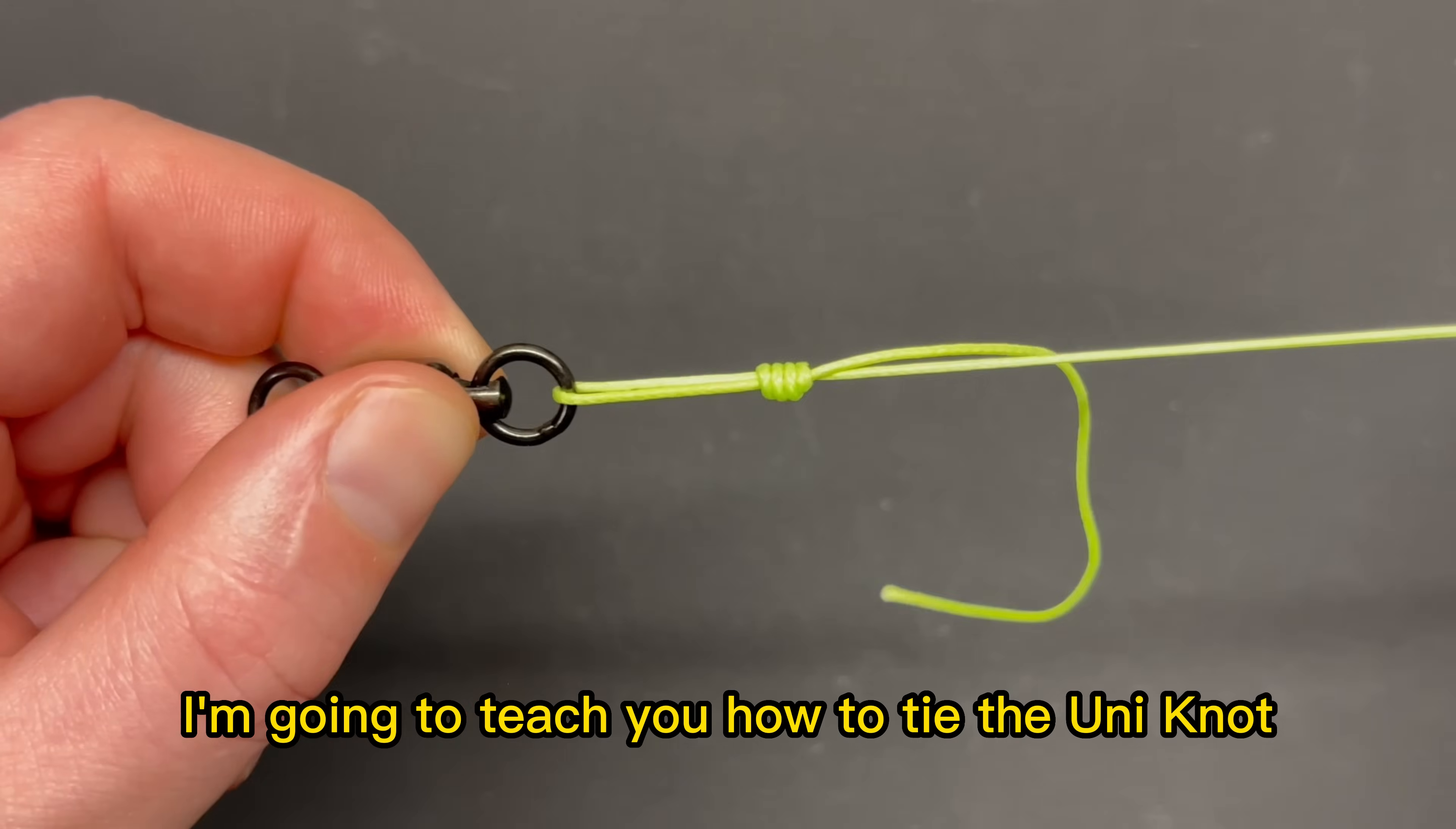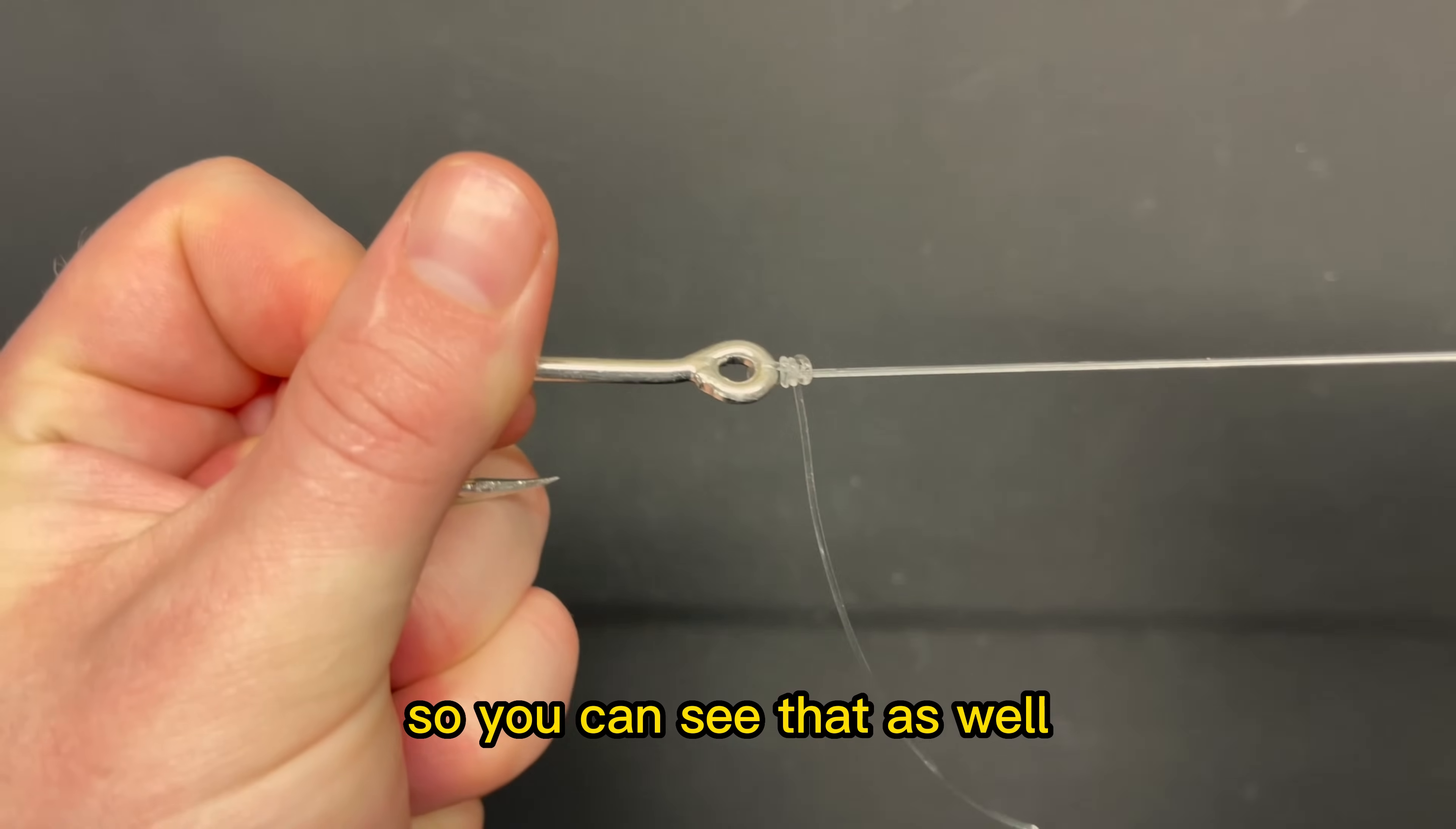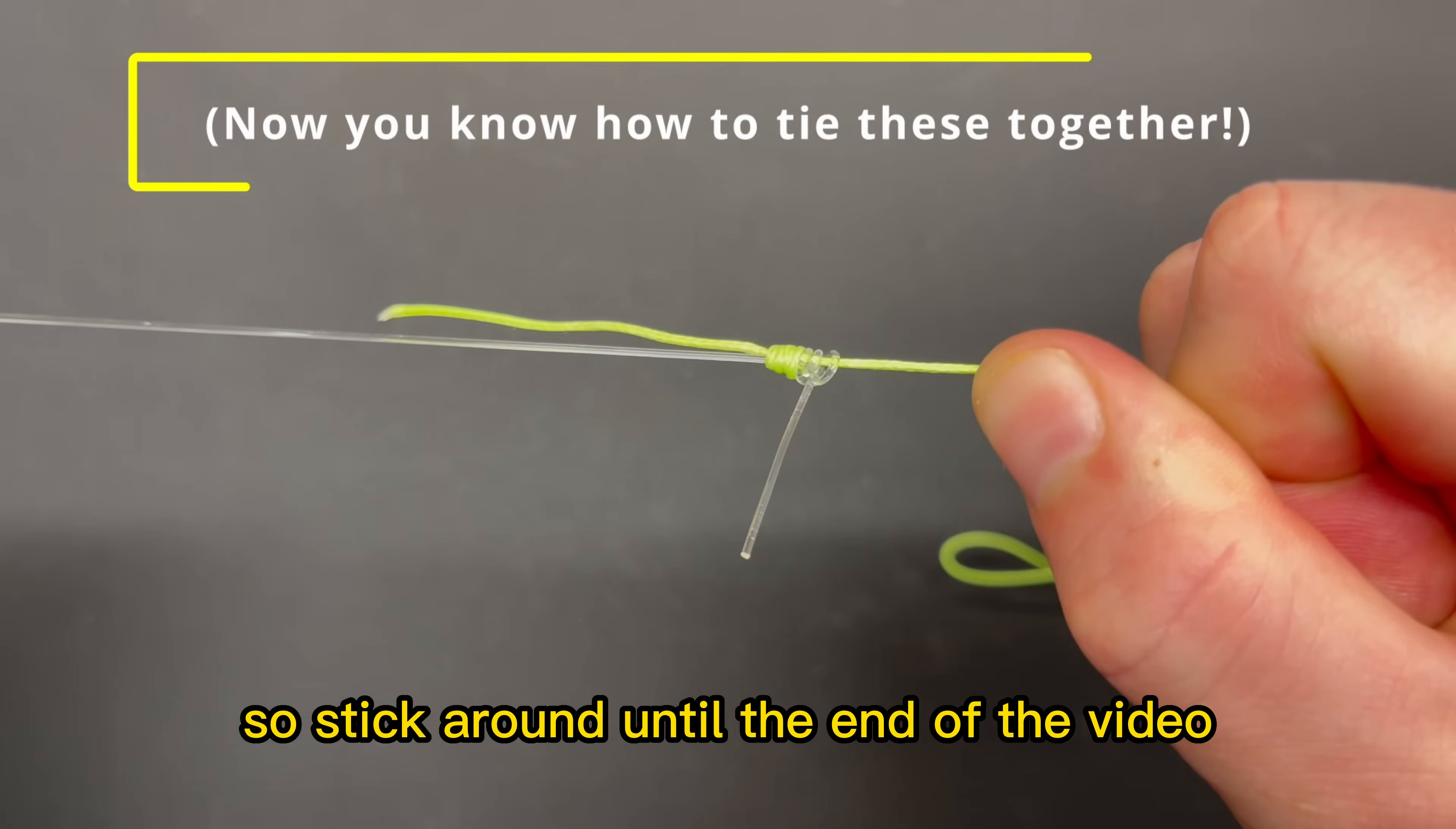In this video, I'm going to teach you how to tie the uni knot by first tying it with braid, and then I'll tie it with monofilament line so you can see that as well. After that, I'll explain how learning this knot is actually exponentially more useful than it may seem, so stick around until the end of the video.